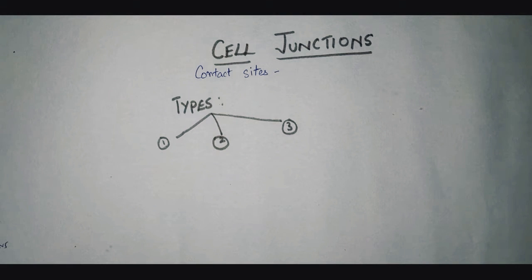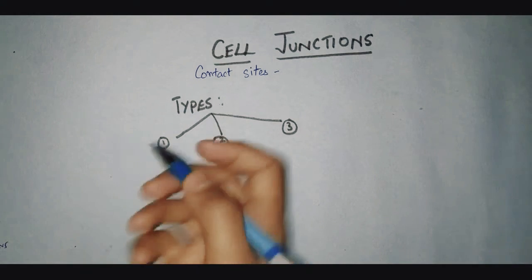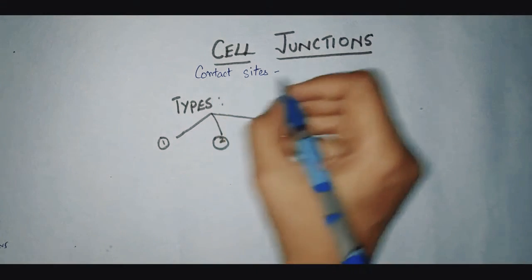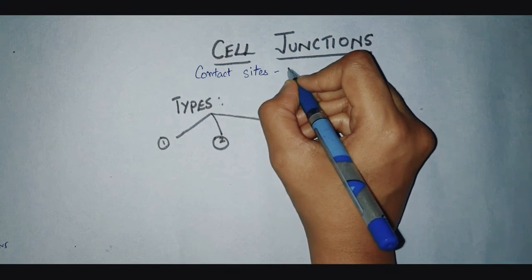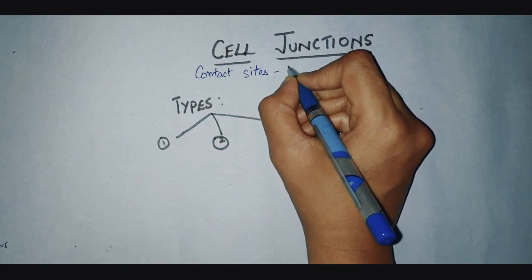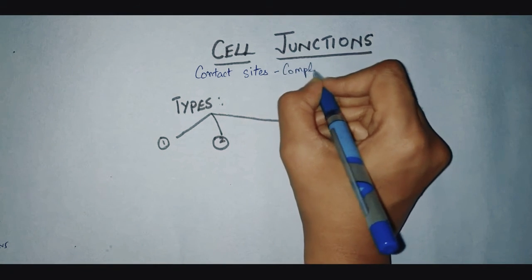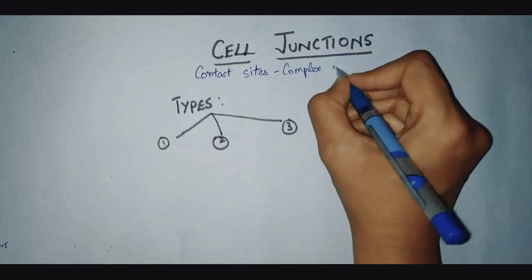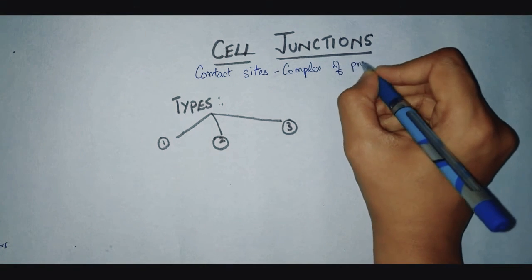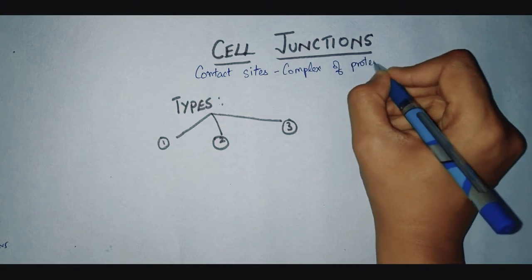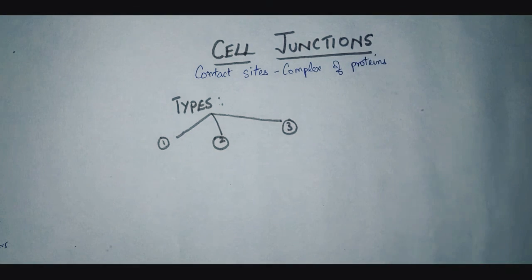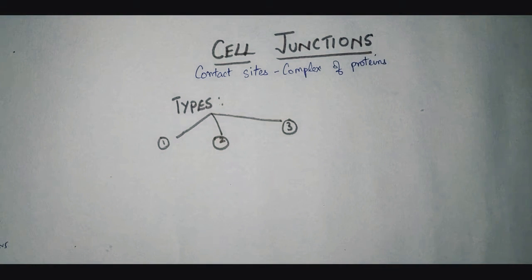After cytoskeleton, our next video is on cell junctions. What are cell junctions? They are contact sites between cells and the extracellular matrix. These are made up of a complex of proteins based on where they are located, what their functions are, and what type of proteins are present. There are various types of cell junctions.